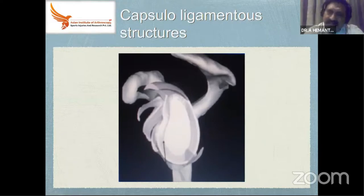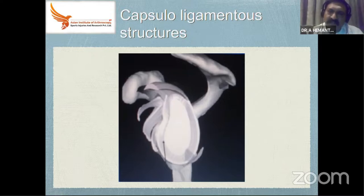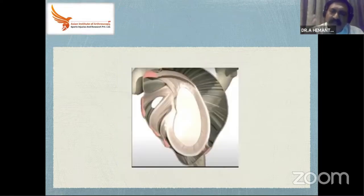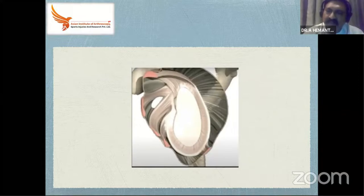There is a capsule which has thickened at multiple levels: the superior glenohumeral ligament, middle glenohumeral ligament, and the inferior glenohumeral ligament — all attached to the glenoid. This is how it looks. The ligaments are essentially thickenings of the capsule; they are not separately identifiable structures.